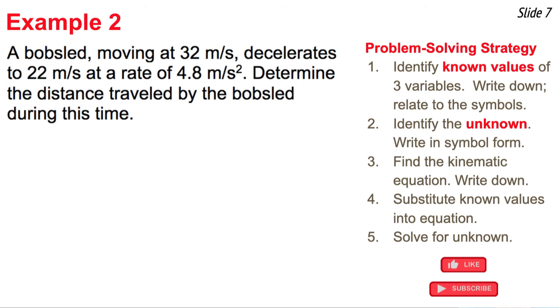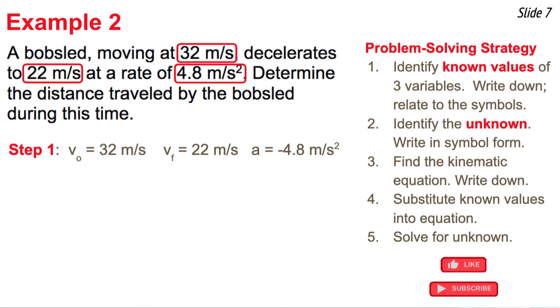This is the second of three examples. It says a bobsled moving at 32 meters per second decelerates to 22 meters per second at a rate of 4.8 meters per second squared. The three known values are obvious, but exactly what they represent takes a little more careful reading. The bobsled that was originally moving at 32 meters per second. So that's V original. And then it slows down or decelerates to 22 meters per second. So that's V final. And the rate of acceleration, or we should say deceleration, is 4.8 meters per second squared. But I need to put a negative in front of it because that's a slowing down motion. So here's what I have when I'm done with step one.